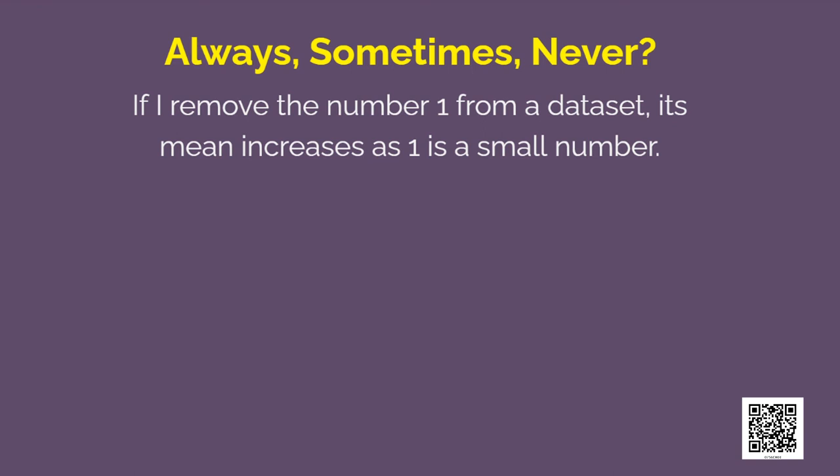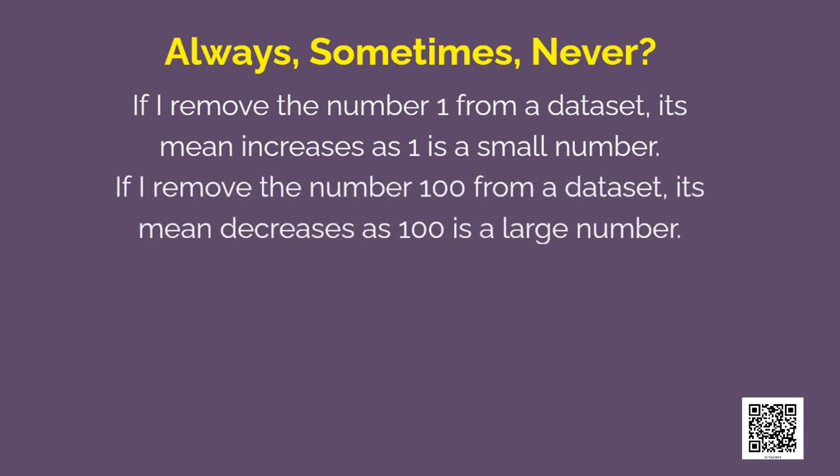If I remove the number 1 from a data set, its mean increases as 1 is a small number. If I remove the number 100 from a data set, its mean decreases as 100 is a large number. Sometimes yes and sometimes no. So, this depends on what the value of mean is. If the mean is greater than 1, then removing 1 will increase the mean. Whereas, if the mean is less than 1, then removing 1 will decrease the mean. Similarly, if the mean is less than 100, then removing 100 will decrease the mean.